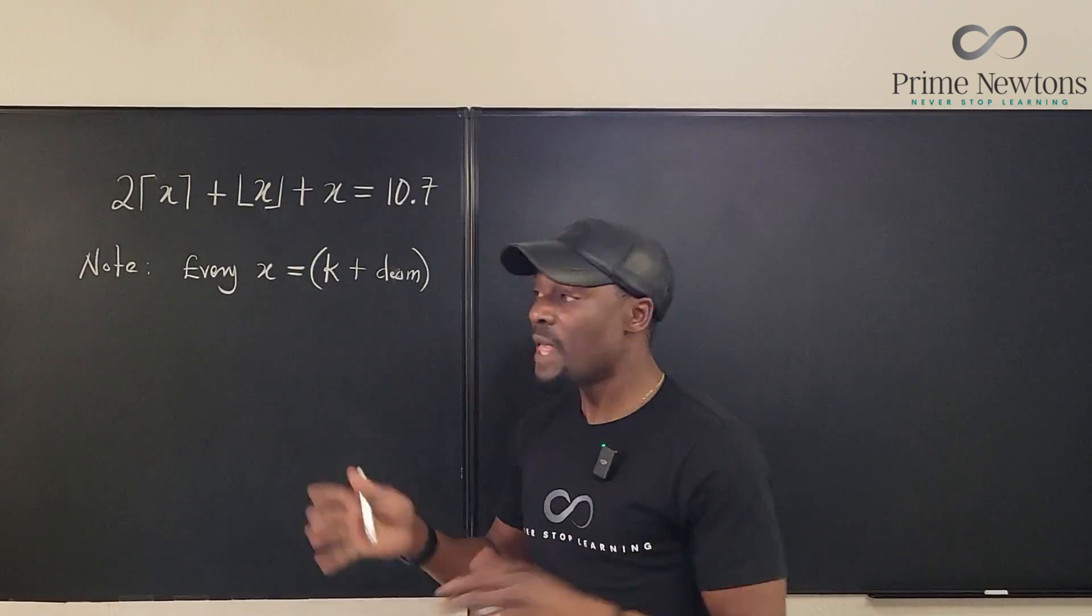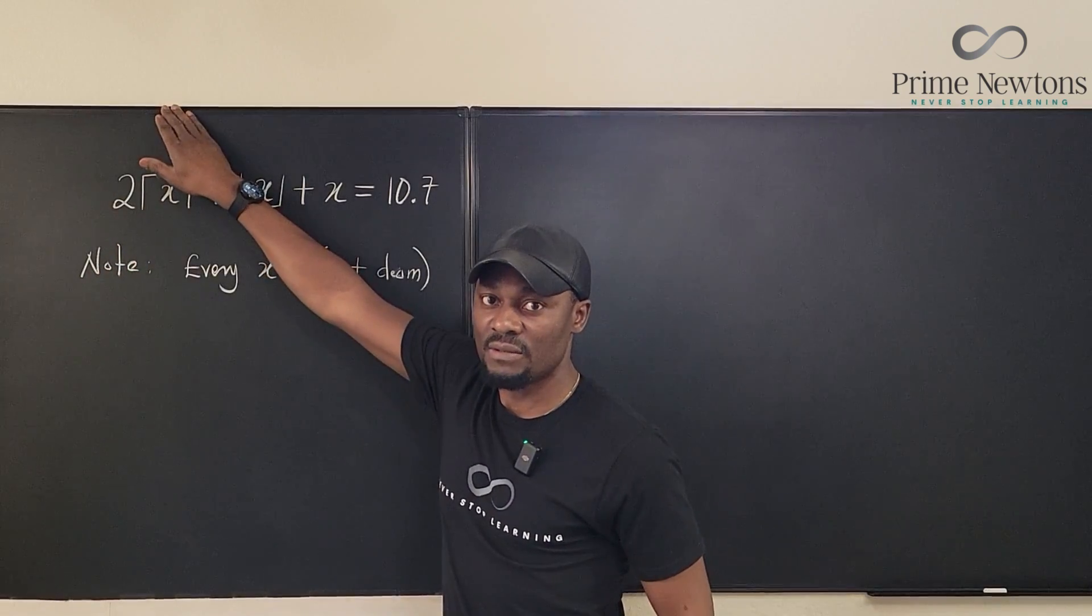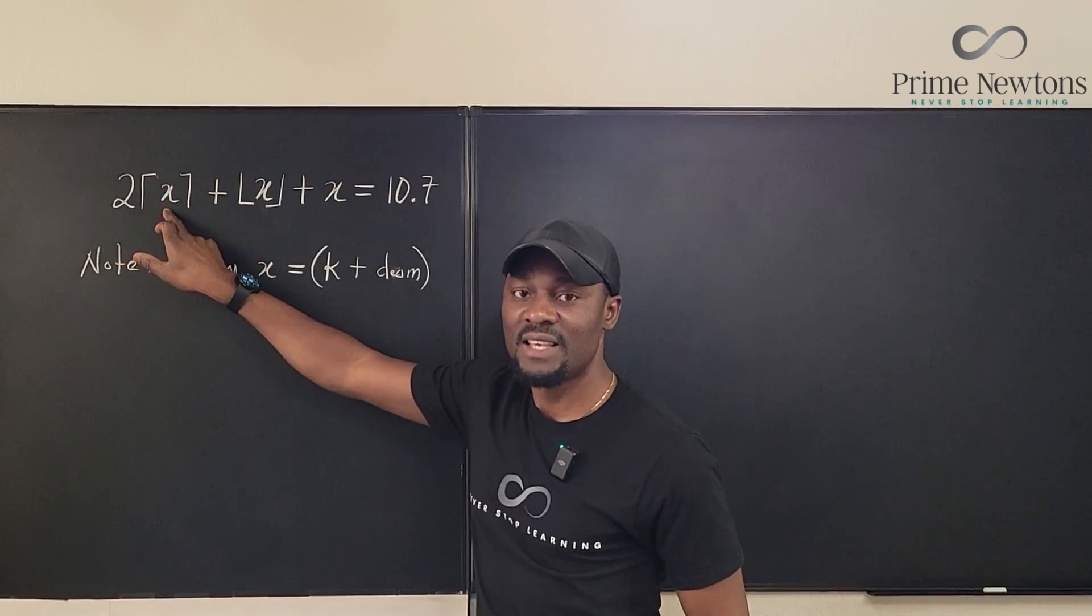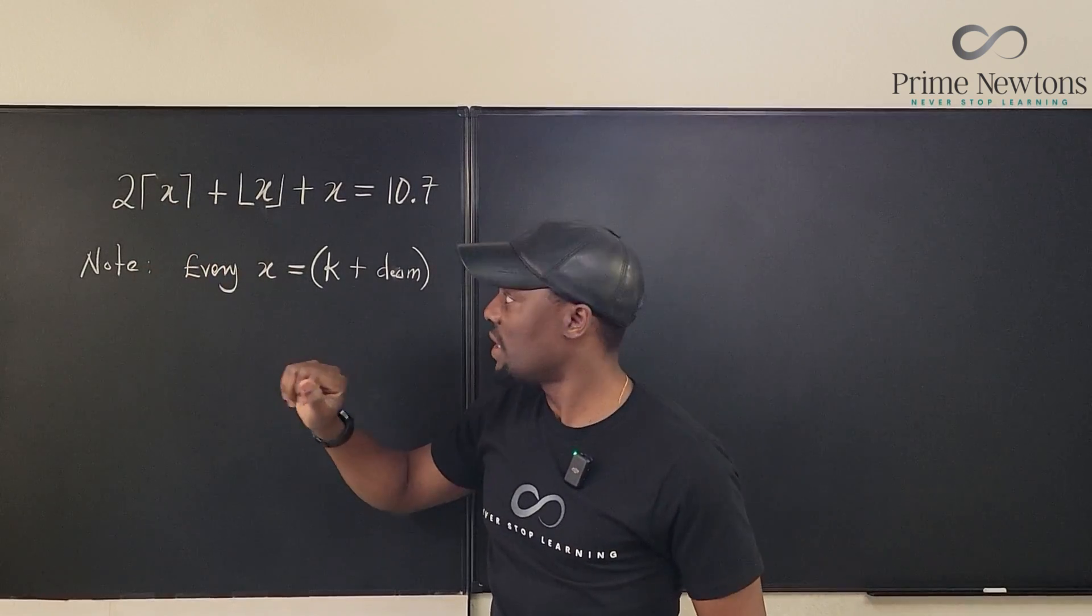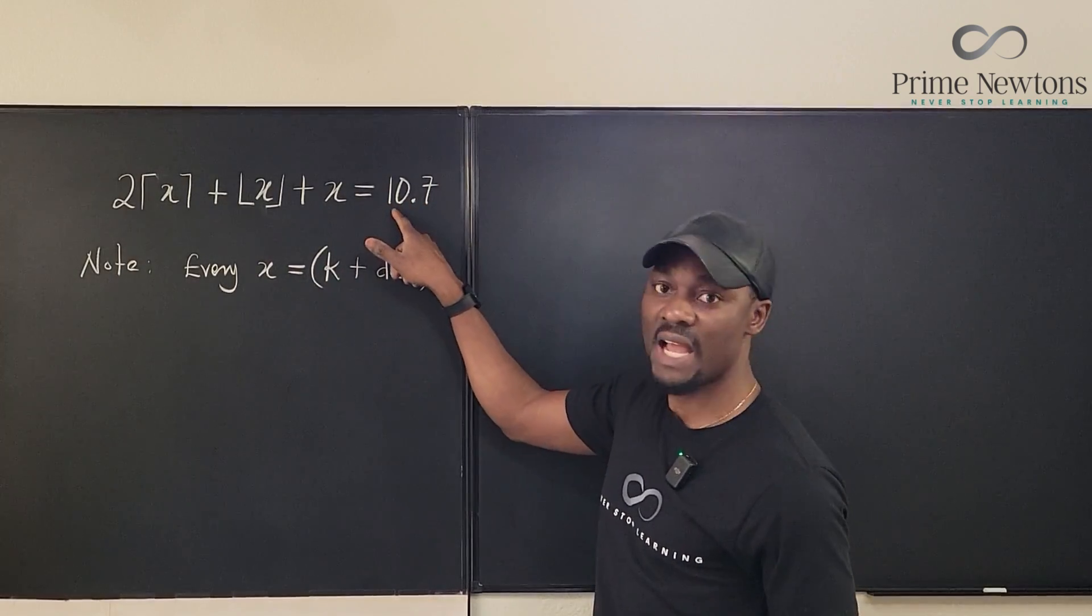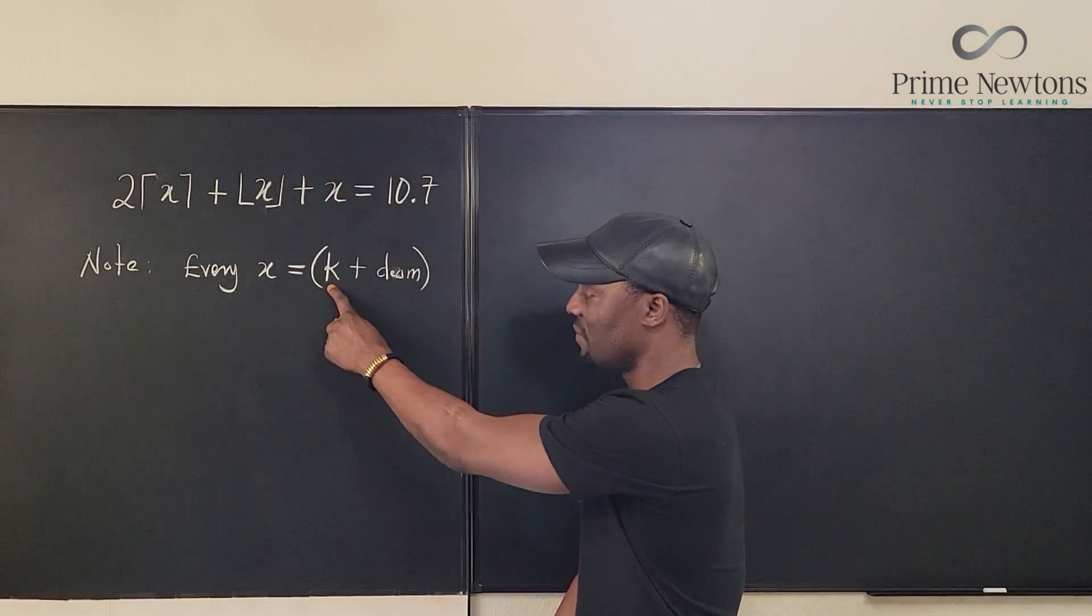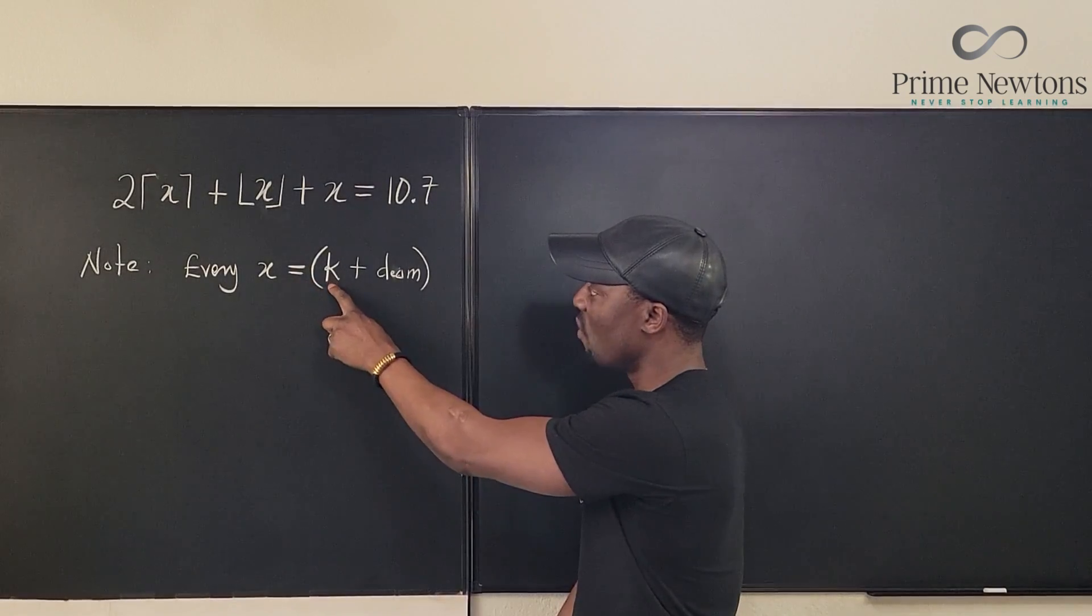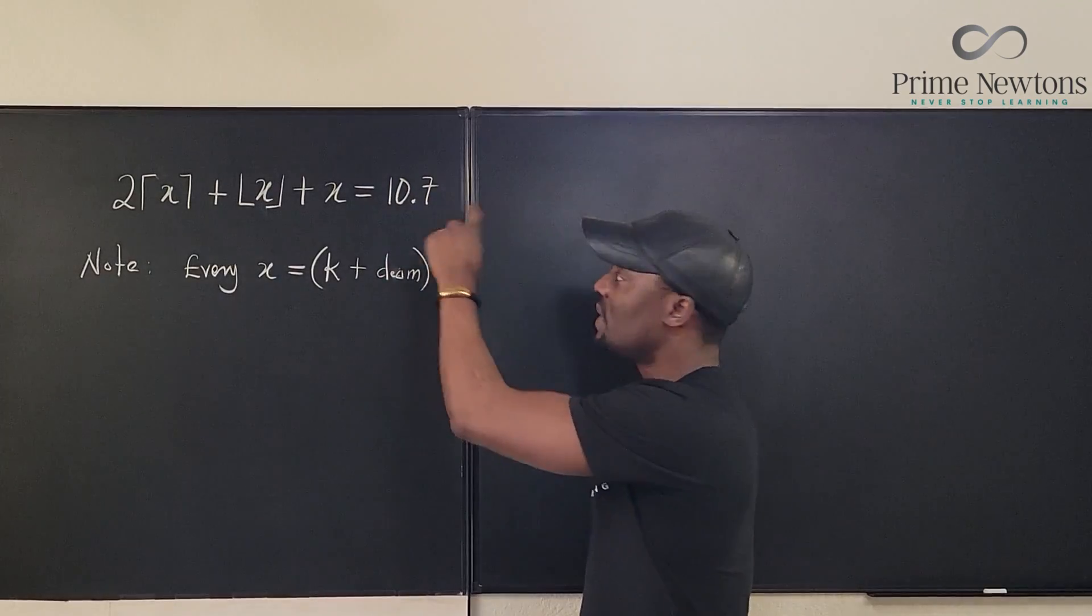Looking at the problem, whatever comes out of a ceiling function is always an integer. By definition, the ceiling of X is the smallest integer greater than X. For example, the ceiling of 10.7 is 11 and the floor is 10. This tells you that K is always the floor of X. To get the ceiling of X, you just add 1 to the floor because then you go to the next number. The decimal part is converted into a whole number.